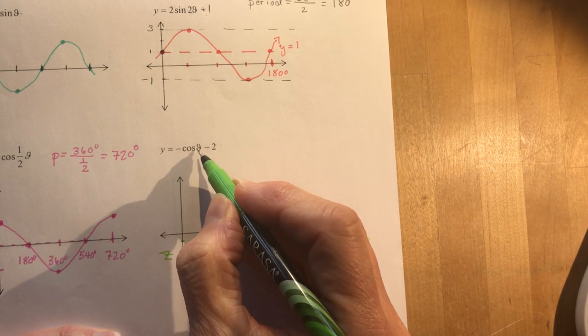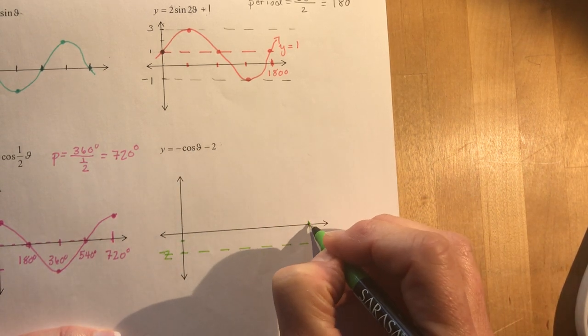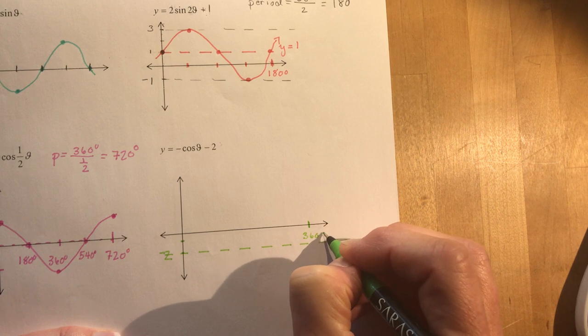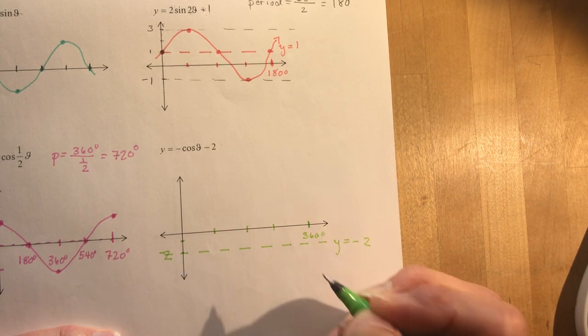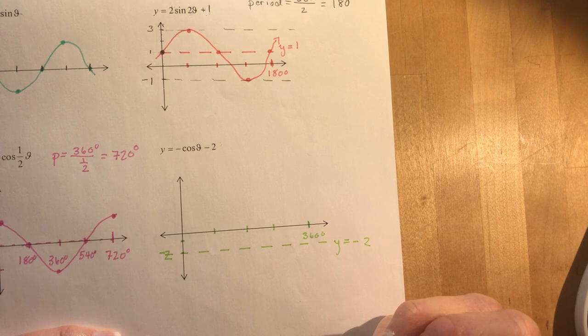What is the period? Well, the k value here is just one, so that means this is going to be 360 degrees, one complete cycle. And I divide it into quarters.